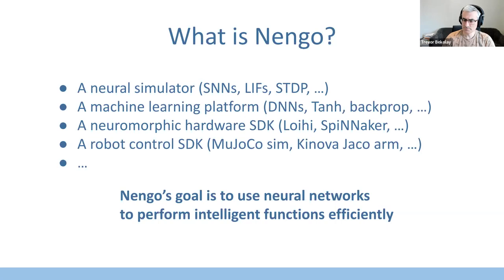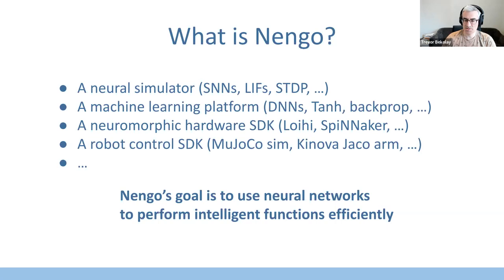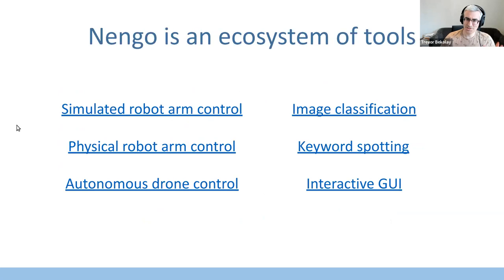Nengo has also been used to control different types of simulation environments like MuJoCo and AirSim, and to actually drive physical robot arms. The driving motivation behind Nengo is to use neural networks to perform intelligent functions efficiently — differentiating it from more research-focused tools that aim to directly emulate biological behavior. The goal was to get neural networks to actually do things.